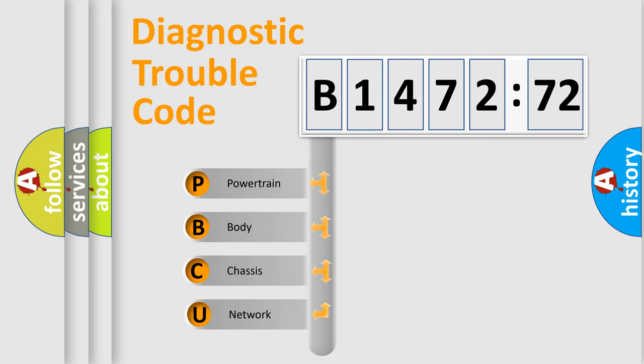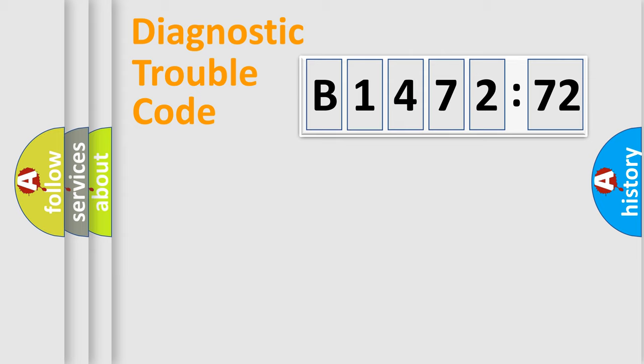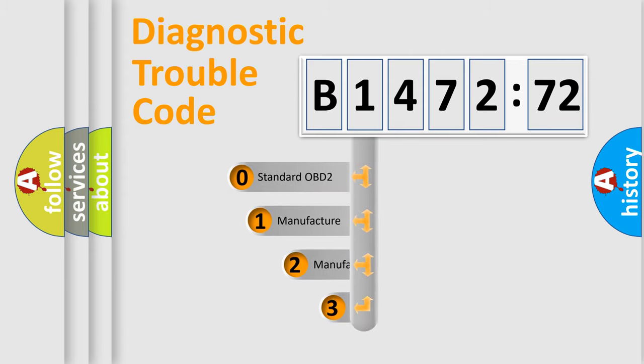First, let's look at the history of diagnostic fault code composition according to the OBD2 protocol, which is unified for all automakers since 2000. We divide the electric system of automobiles into four basic units: Powertrain, Body, Chassis, and Network.